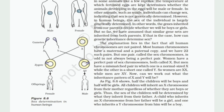The explanation lies in the fact that all human chromosomes are not paired. Most human chromosomes have a maternal and a paternal copy, and we have 22 such pairs. But one pair, called the sex chromosomes, is odd and not always a perfect pair. Women have a perfect pair of sex chromosomes, both called X. But men have a mismatched pair in which one is a normal-sized X while the other is a short one called Y. So women are XX, while men are XY. As Figure 8.6 shows, half the children will be boys and half will be girls. All children will inherit an X chromosome from their mother regardless of whether they are boys or girls. Thus, the sex of the children will be determined by what they inherit from their father. A child who inherits an X chromosome from her father will be a girl, and one who inherits a Y chromosome from him will be a boy.